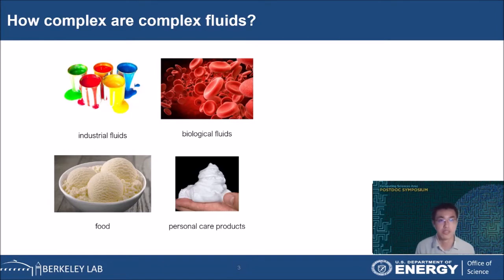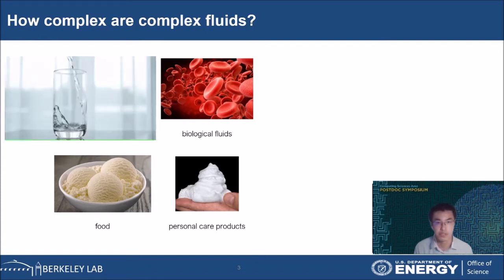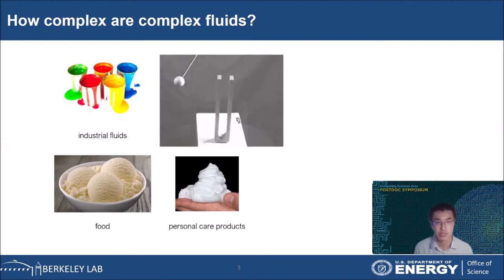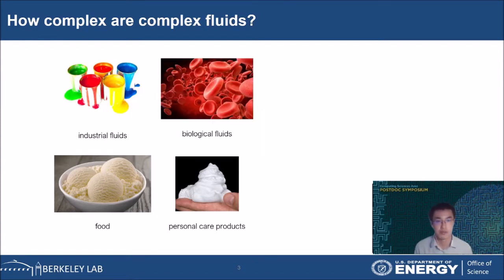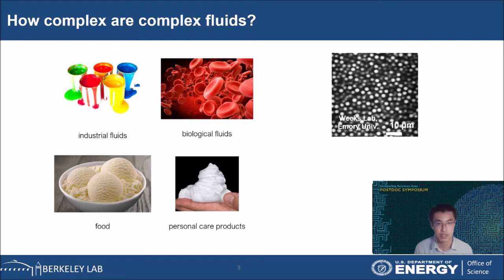Let's start with some background. Complex fluids can be found everywhere in natural and engineered materials. They are distinct from simple fluids, which flow continuously under shear and cannot hold a shape, and different from elastic solids, which spring back with perfect memory. Complex fluids are useful precisely because they exhibit both these types of behaviors. The reason for this behavior is that complex fluids have an internal microstructure formed by the presence of a second non-continuum phase dispersed in a suspending continuum phase.